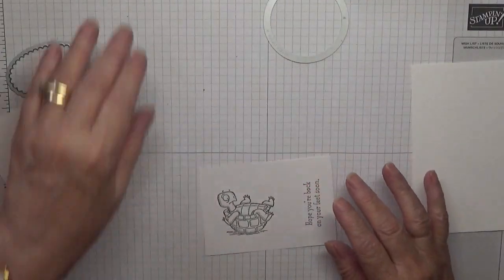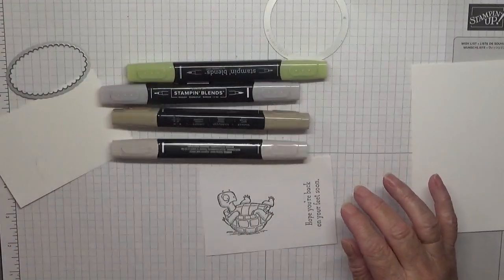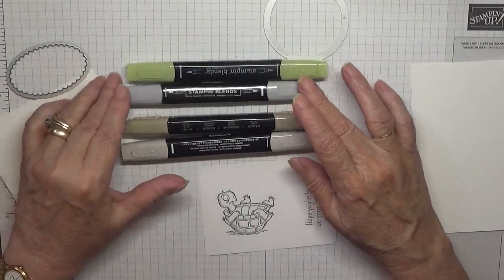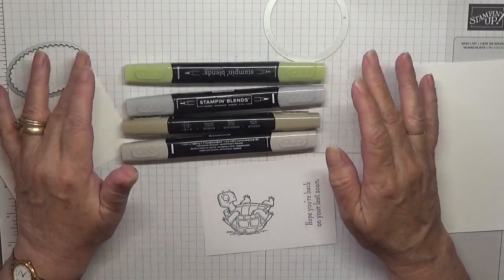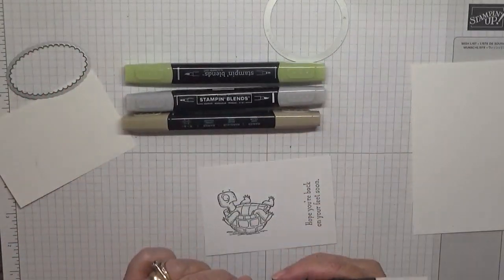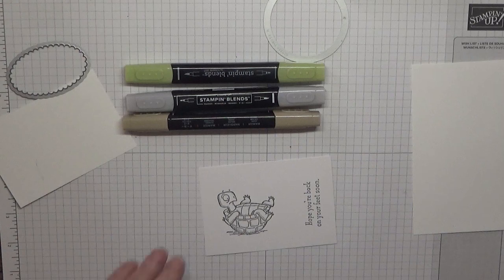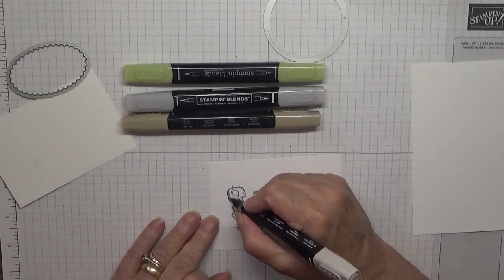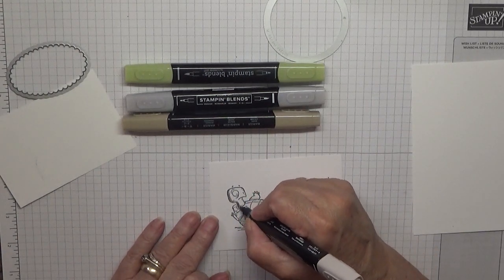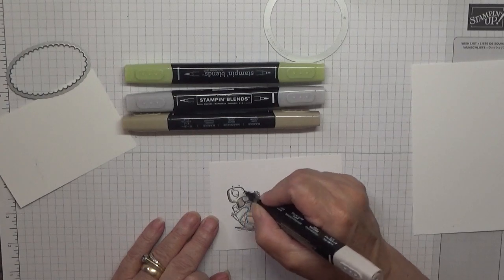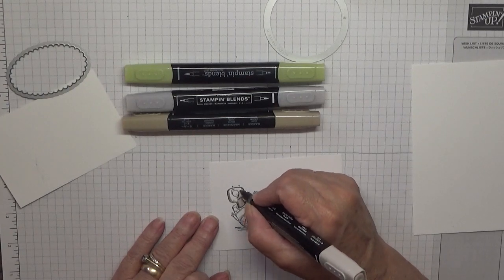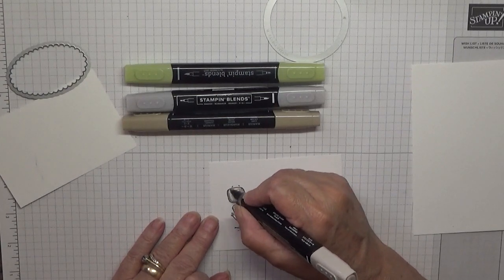First of all, we want to color in this tortoise. I've got light and dark crumb cake, smoky slate, and old olive. First of all, the light crumb cake. I'm just coloring in his head and limbs with this.